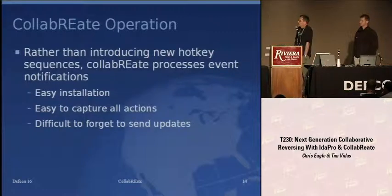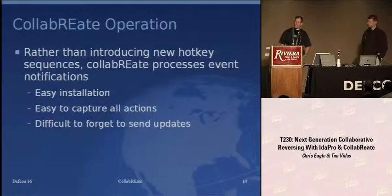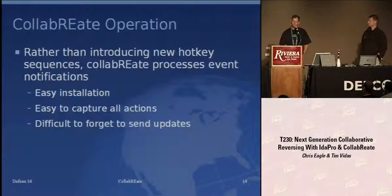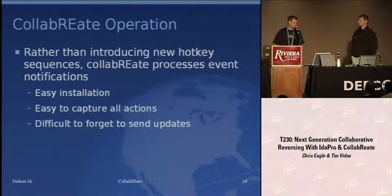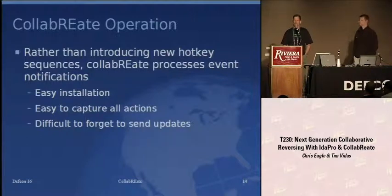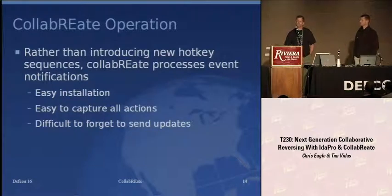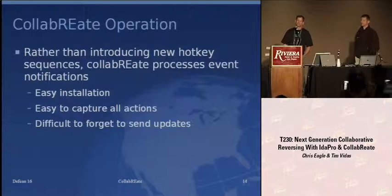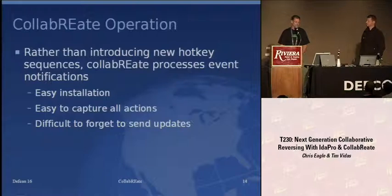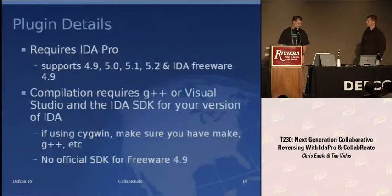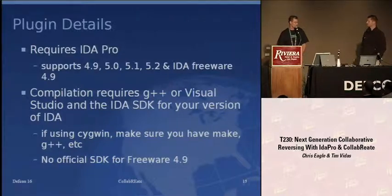The plugin's only job is to capture your events, package them up, ship them to a server, and process incoming events from other users. We introduce one new hotkey to trigger the plugin — that's the extent of our intrusion into your IDA experience. You drop the binary plugin into your IDA plugins directory, trigger the plugin, join a project, and it's hands-off — no "oops, I forgot to push an update." You get notifications if you drop your network connection so you know to reconnect before generating more changes. The plugin compiles for IDA versions 4.9 through 5.3, and is available for the freeware version with build scripts for G++ and Visual Studio.